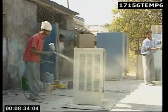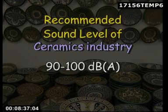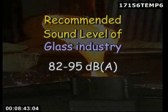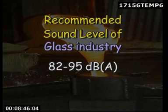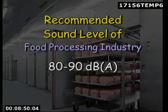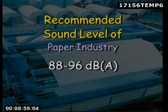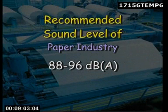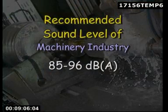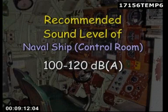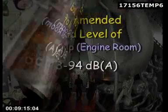Sound levels in some industries (A-weighted): Ceramics industry 90–100 dB; Glass industry 80–95 dB; Food processing industry 80–90 dB; Chemicals industry 85–98 dB; Paper industry 88–96 dB; Machinery 85–96 dB; Control room of a naval ship 100–120 dB; Engine room of a naval ship 93–94 dB.